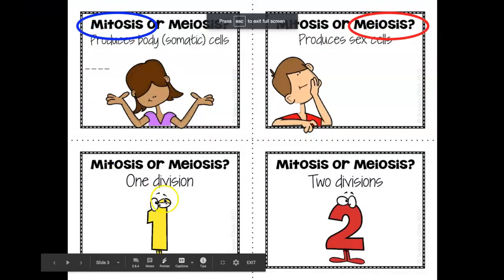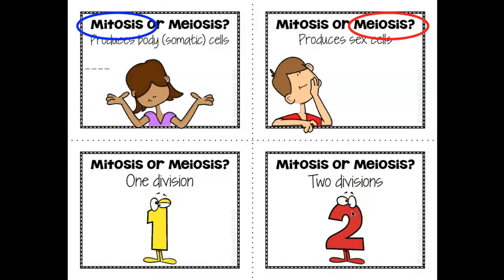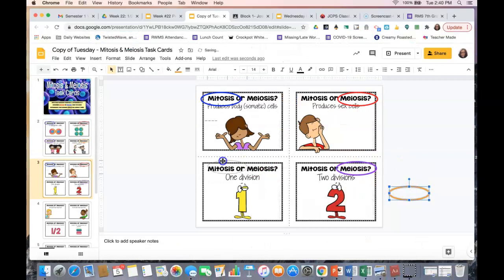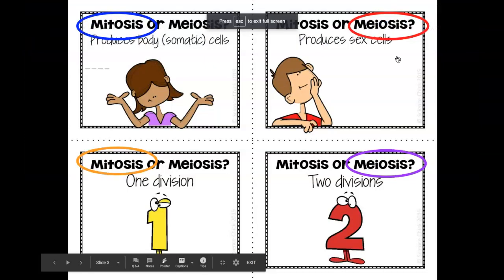Which one only has one division, and which one has two divisions where they divide and break down twice? Meiosis is a much more complex procedure and it takes longer because there are two divisions. So two divisions would definitely be meiosis, and only one division would be mitosis. Here are your answers for this slide.